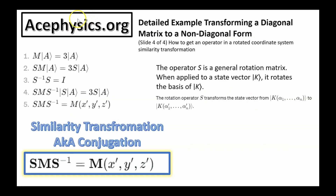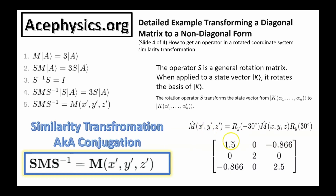Starting with our original equation M onto A equals 3 onto A, I define an operator S as a general rotation matrix. Multiplying S on the left of both sides gives SM onto A equals 3S onto A. Since SS inverse is the identity matrix, I insert it to get SMS inverse S onto A equals 3S onto A. Therefore SMS inverse is the matrix M expressed in the rotated coordinate system — this formula is the similarity transformation. For our example, S was a rotation about Y by negative 30 degrees, and S inverse is RY of positive 30, yielding M in the prime coordinate system.